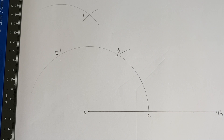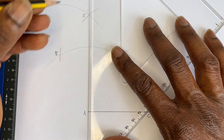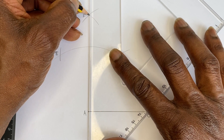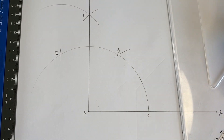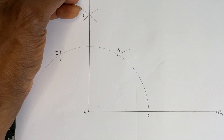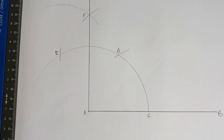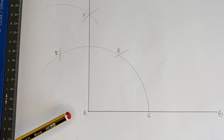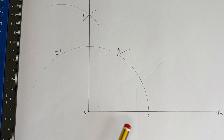Then you draw a straight line from point F to A. That is the perpendicular line. We consider this point to be G. So line GA is perpendicular to line AB. This is how to construct a perpendicular line from the end of a line using a compass — we have this perpendicular line to line AB at the end point.